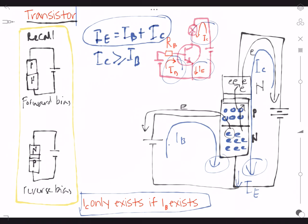And IE is the summation of IC and IB. And you need to know that IC is much bigger than IB because we have bigger voltage here compared to this one.